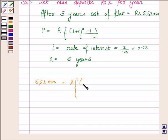So it is x into (1 plus 0.05) to the power 5 minus 1, upon 0.05.